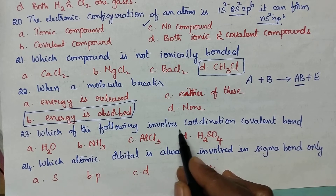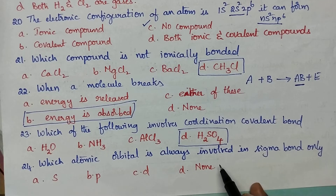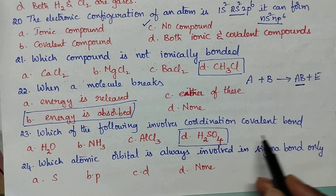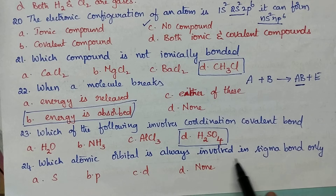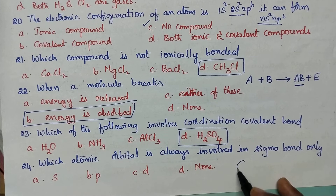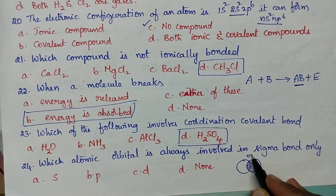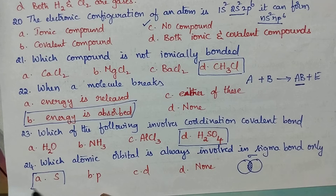Which of the following involves a coordination covalent bond? Option D is the right answer — sulfuric acid involves the formation of a coordination covalent bond. Which atomic orbital is always involved in sigma bond only? The S orbital is always involved in the formation of only sigma bonds. So option A is the right answer.